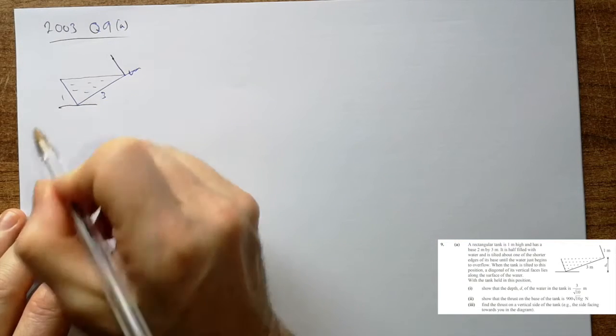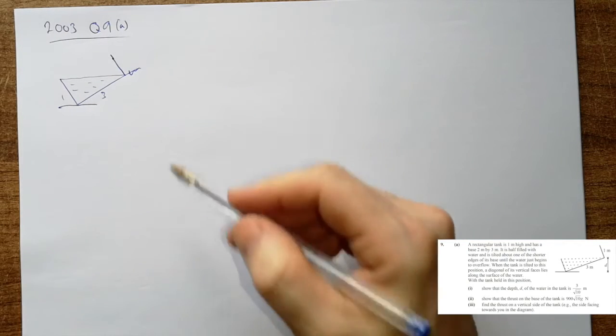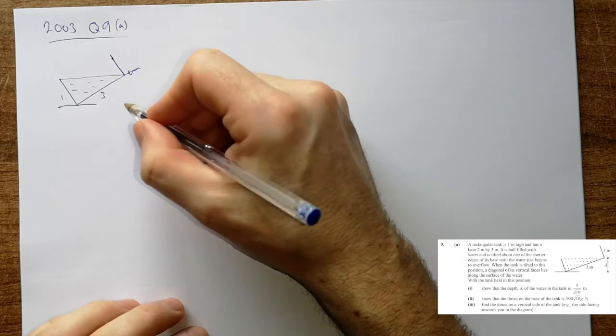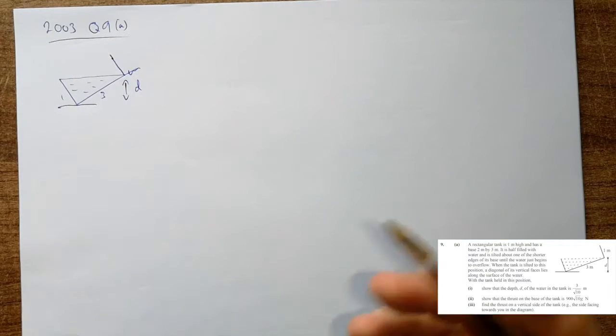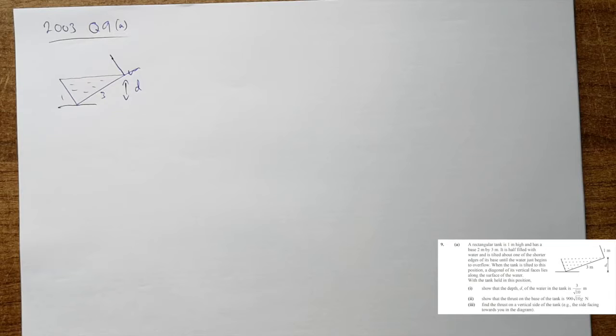We know that's 3, we know that's 1, and this is all of our water here. So what have we got to figure out? We want to show the depth is here, figure out what the depth is. Actually we're even told it's 3 over root 10, that's kind of nice, we know where we're going. This bit isn't too bad and it gets a little bit funkier when we get into parts two and three.